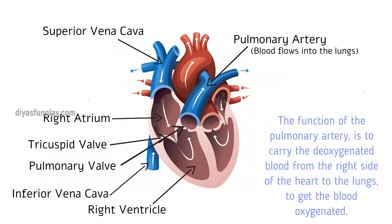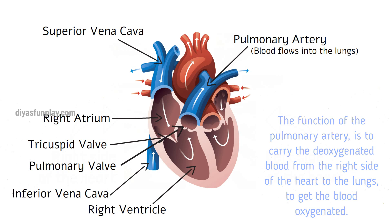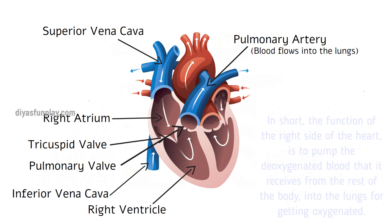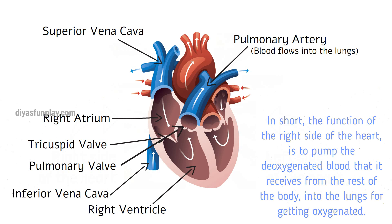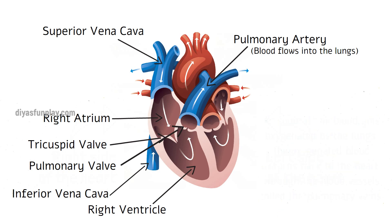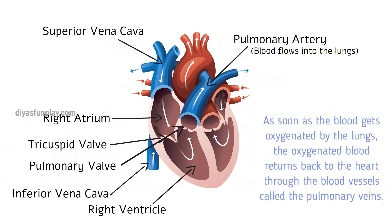The function of the pulmonary artery is to carry the deoxygenated blood from the right side of the heart to the lungs to get oxygenated. In short, the function of the right side of the heart is to pump the deoxygenated blood it receives from the rest of the body into the lungs for oxygenation.